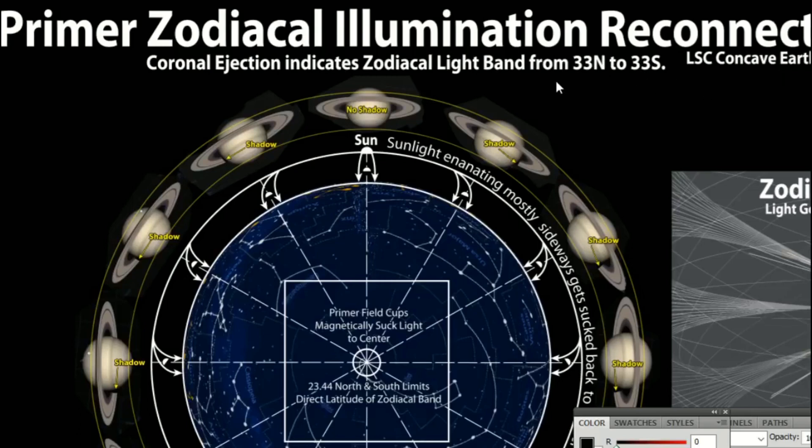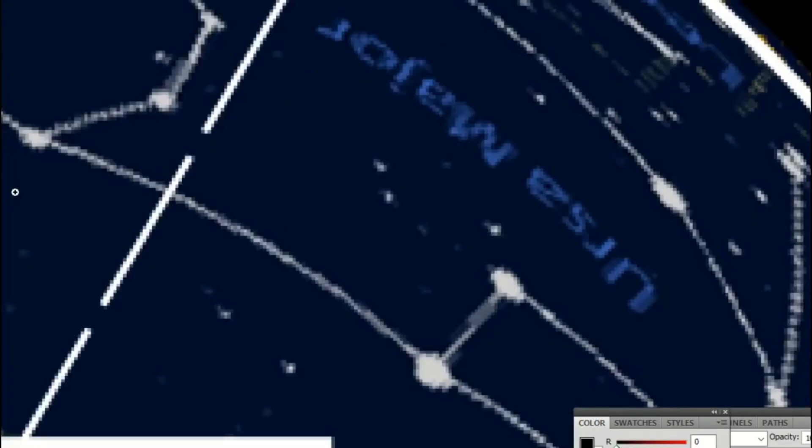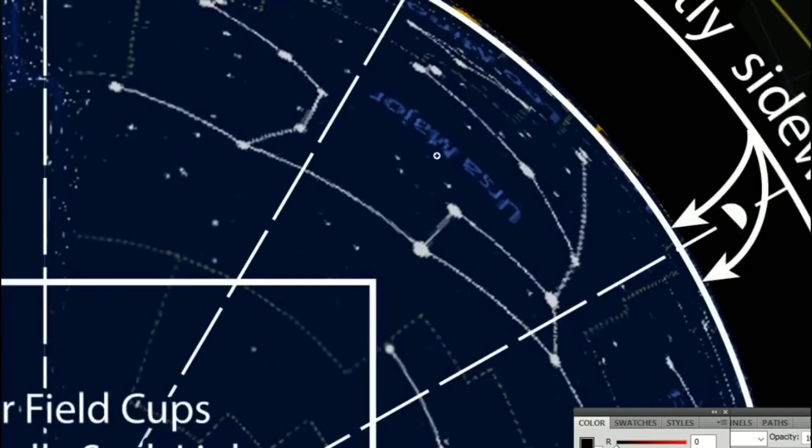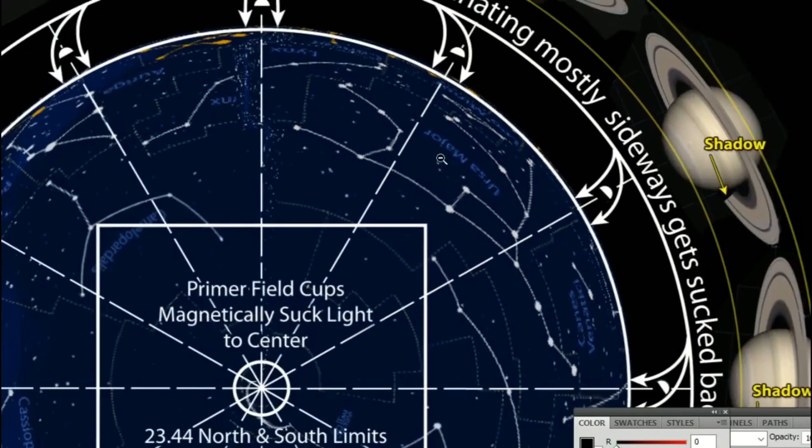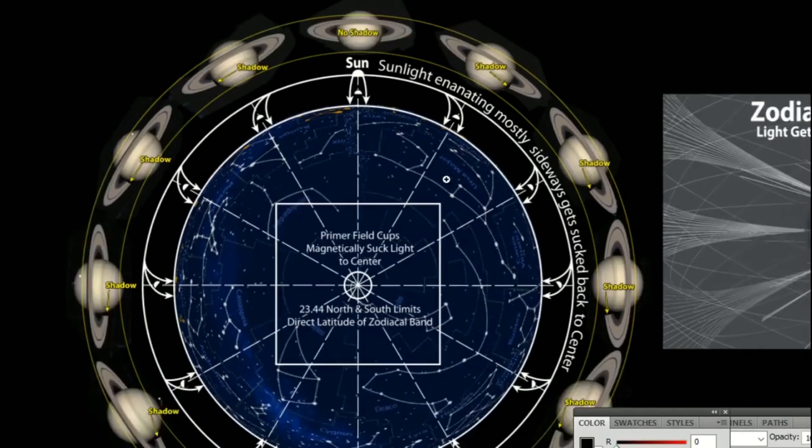When we observe the planets, especially like Saturn and Jupiter, which are behind the Sun within the concave Earth but not as close as Neptune or Uranus, sometimes you're going to see different sides of the planet being affected by the shadow or shading.